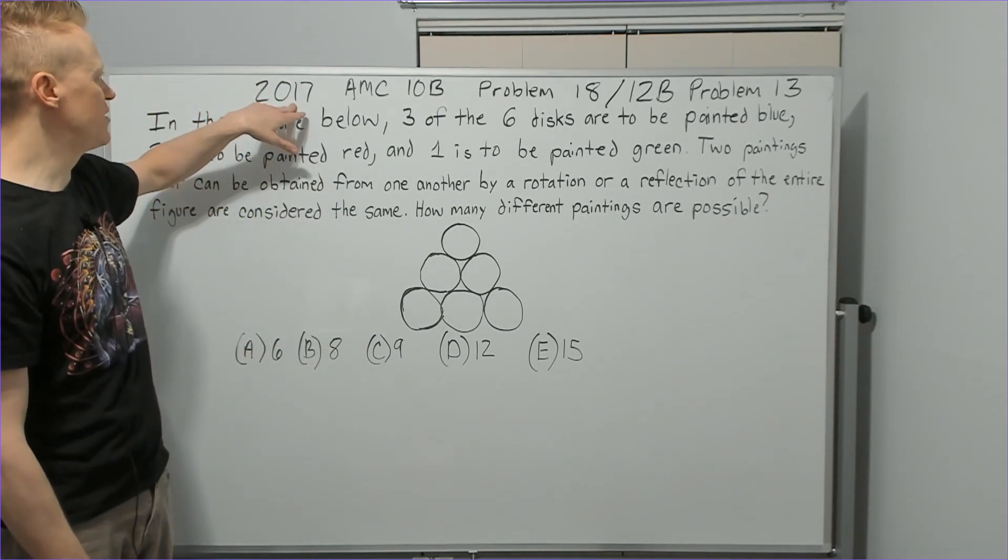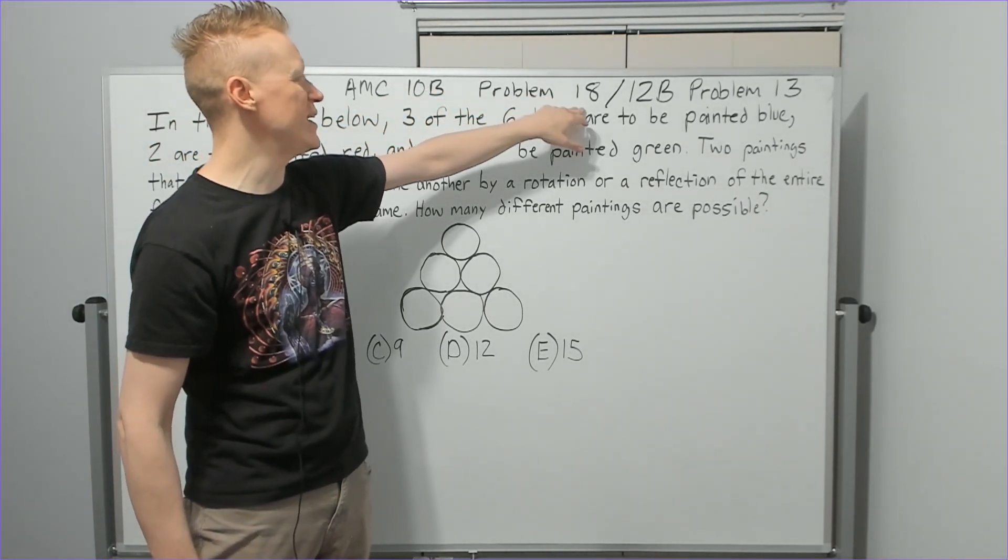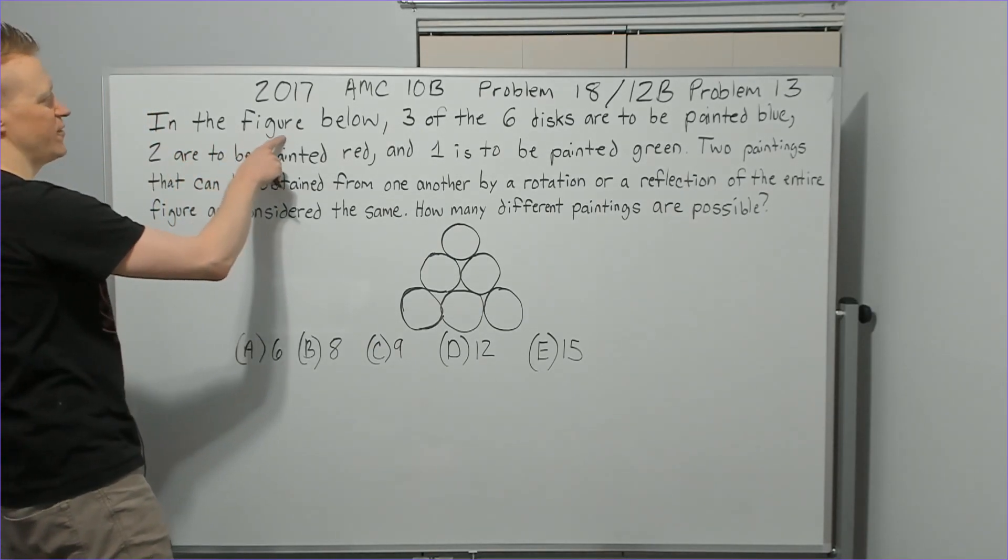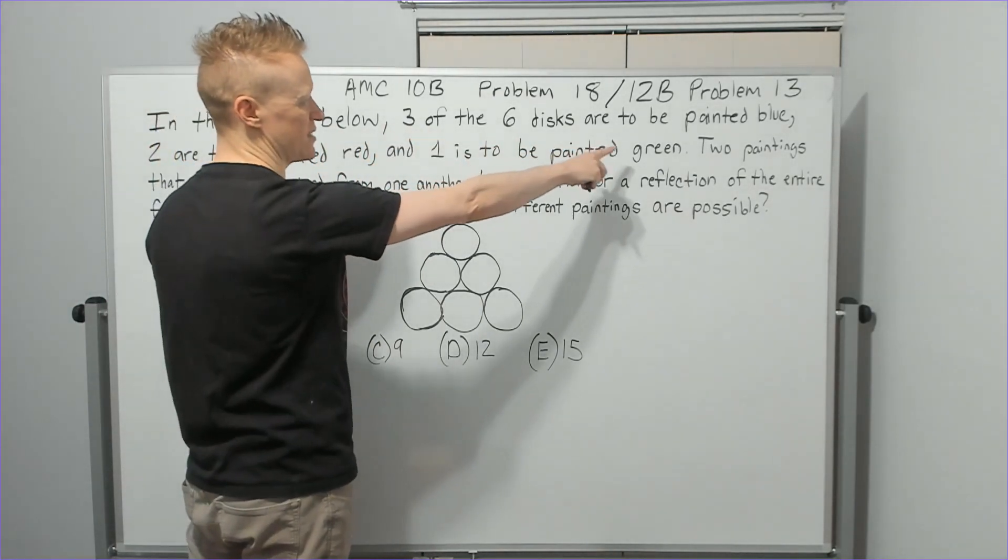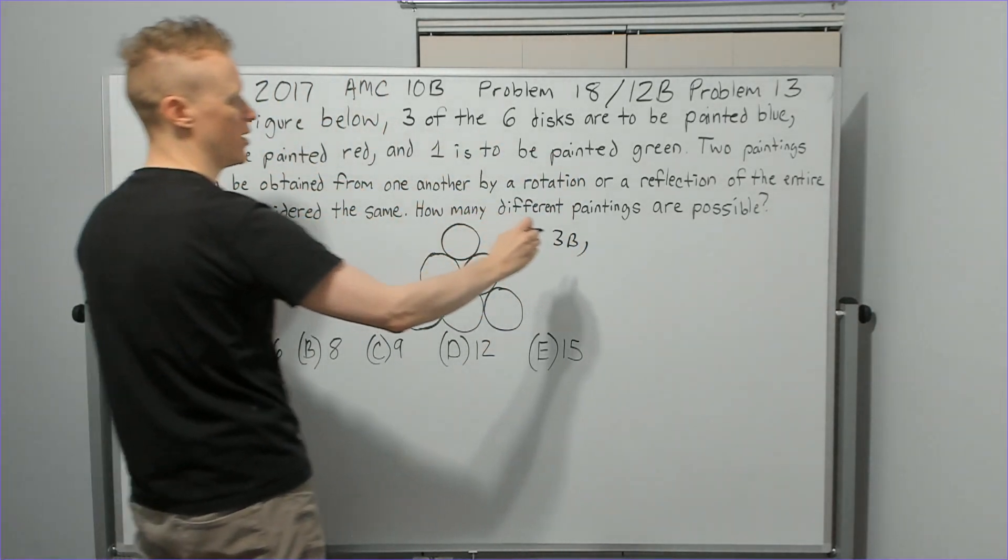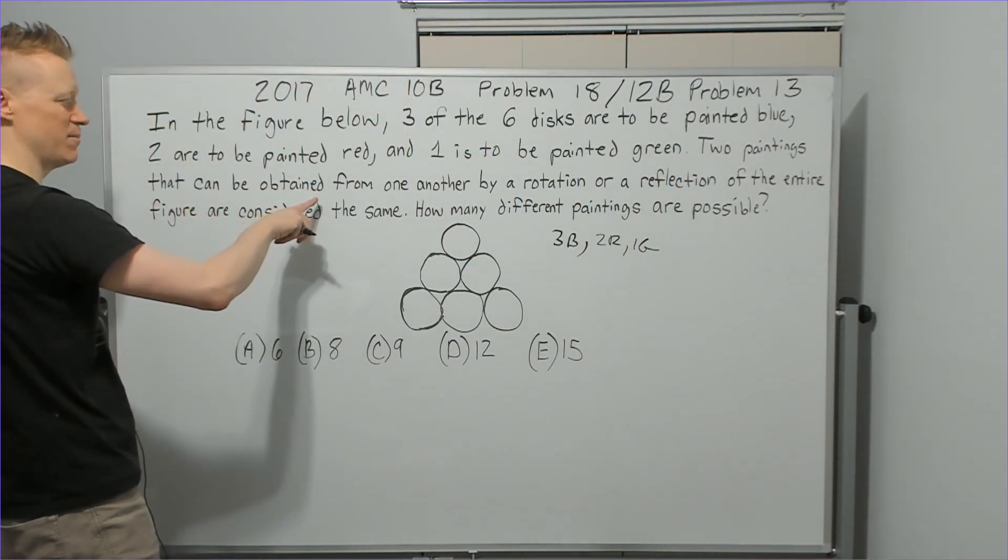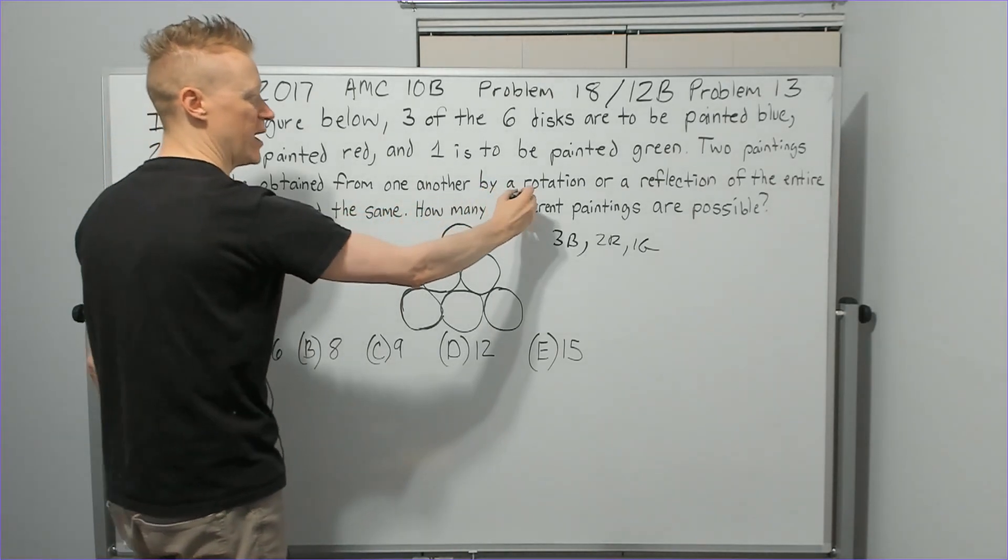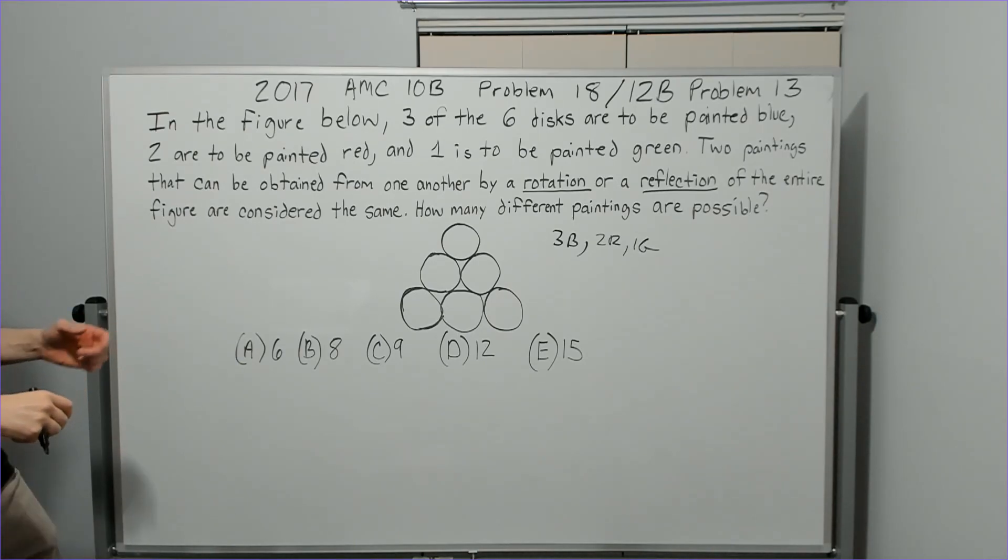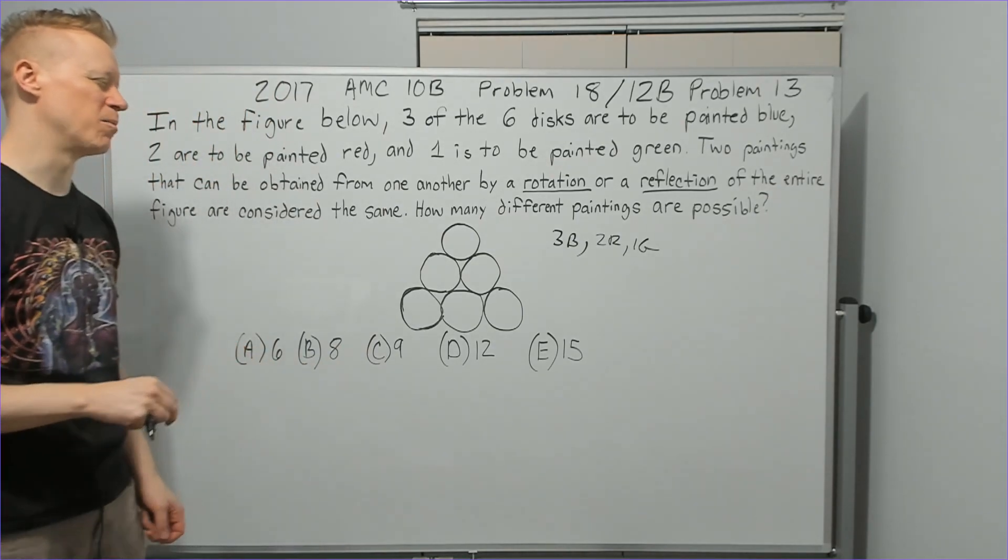Alright, so getting this problem done. 2017 AMC 10B problem 18, it was also the 12B problem 13. In the figure below, three of the six discs are to be painted blue. Two are to be red and one is to be green. Two paintings that can be obtained from one another by a rotation or a reflection of the entire figure are considered the same. How many different paintings are possible?